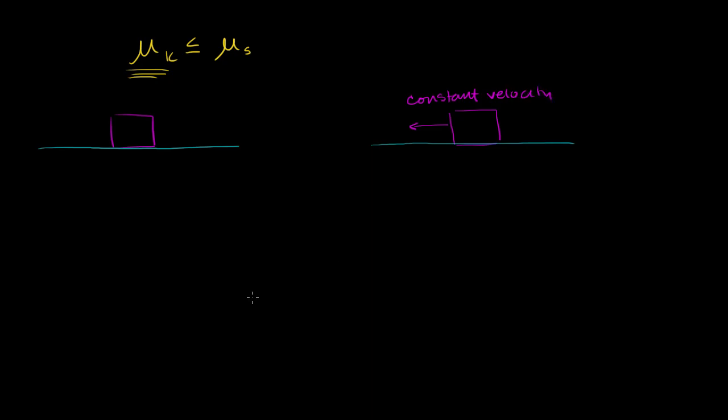And so the interesting thing here is, assuming that these are the same masses and the same surfaces, why should the coefficient of static friction be larger than the coefficient of kinetic friction over here? Why should the coefficient of static friction be larger than the coefficient of kinetic friction?